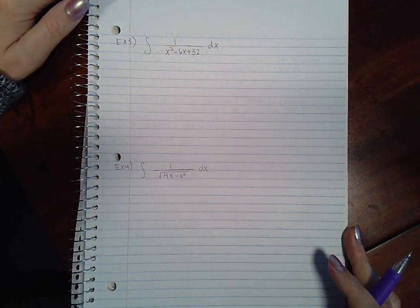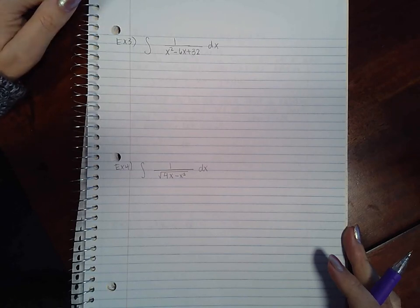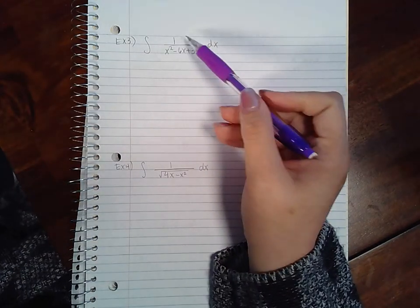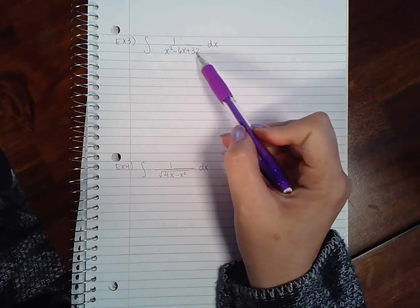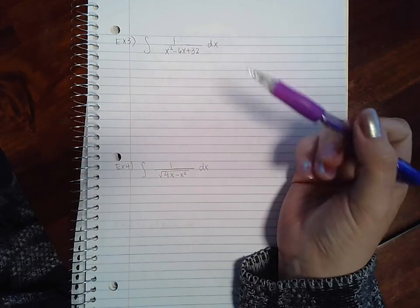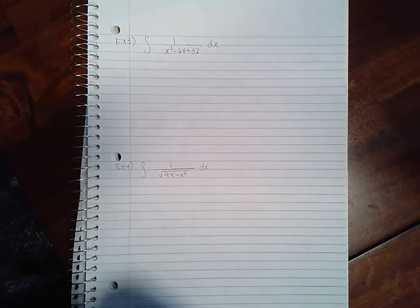Here are some more integration problems from the basic integration techniques. For our first problem we have nothing in the numerator so I can't use u-substitution because the derivative of x squared is x and I don't have any x's in my numerator. However, I can apply inverse trig functions but before I can do that I have to complete the square for this.